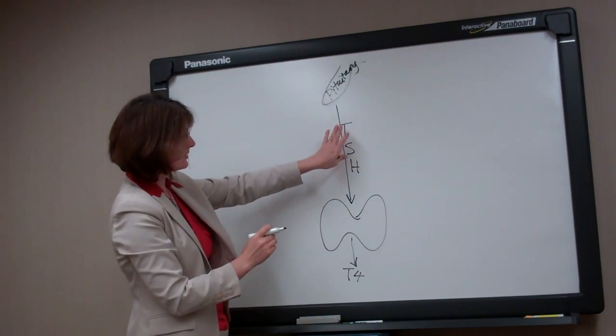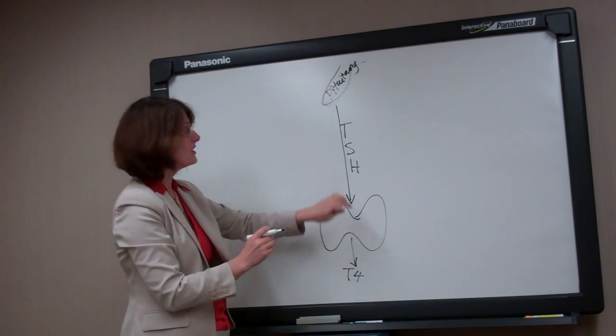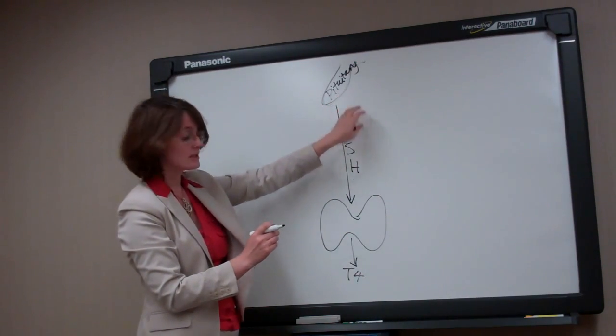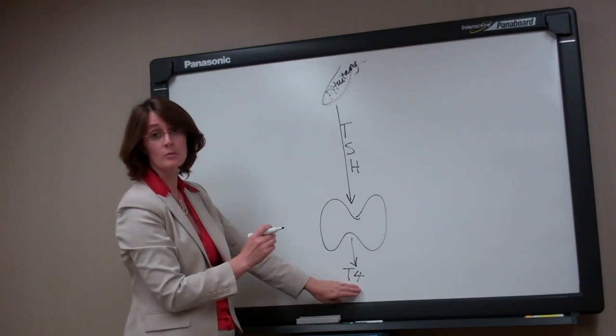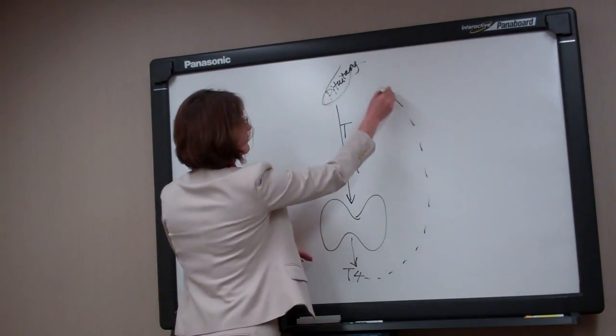Under the influence of this TSH, the thyroid gland makes thyroid hormone. The pituitary gland is constantly aware of how much thyroid hormone there is in the body, and we call that a feedback loop.